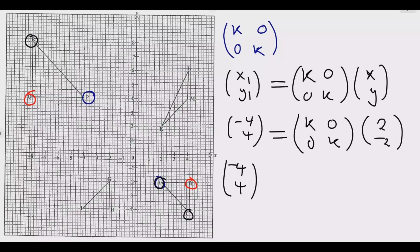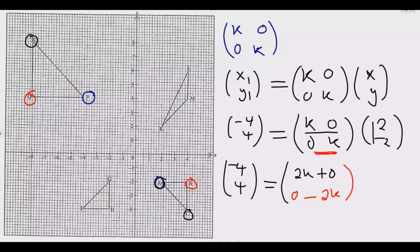Multiplying through: −4 equals k times 2 plus 0 times −2, giving 2k. So −4 = 2k, meaning k = −2. For the second component: −4 equals 0 times 2 plus k times −2, giving −2k. So −4 = −2k, confirming k = −2. To verify, picking a second pair gives the same result: k = −2.